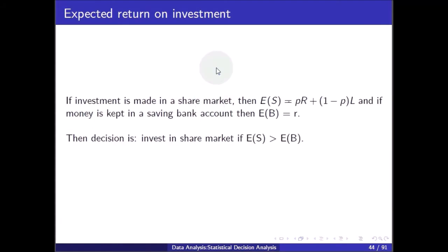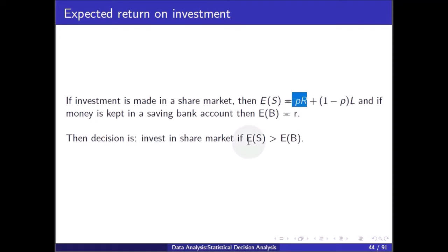Now, the expected return on investment: if investment is made in the share market, then ES = P·R + (1 − P)·L, and if money is kept in the savings bank account, then EB = R. The decision is to invest in the share market if ES is greater than EB.